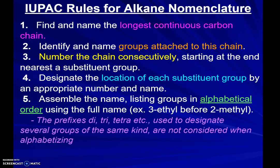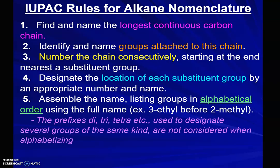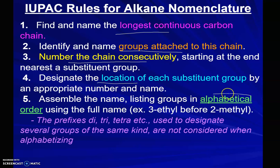Let's take a look at the IUPAC rules for alkane nomenclature. IUPAC is the International Union of Pure and Applied Chemistry, and they make all the rules. First things first: find the longest chain hydrocarbon. Identify the groups that are attached to it. Number the chain consecutively, starting at the end that's going to give the lowest numbers for everything. Designate your location. And when you assemble the name, it has to be in alphabetical order — prefixes don't count. It's not in the number order of where the substitutions are; it's in alphabetical order.